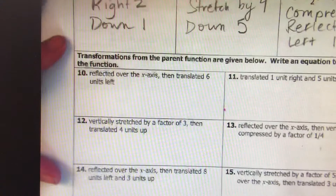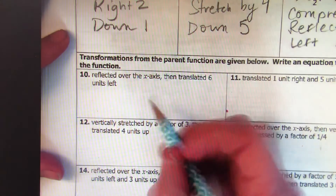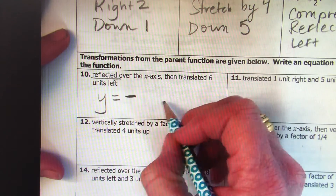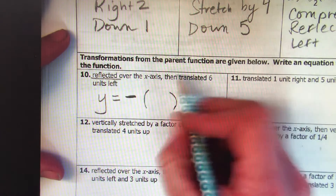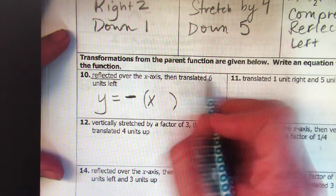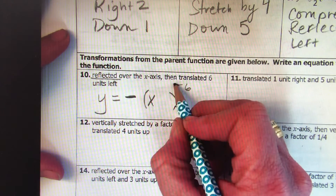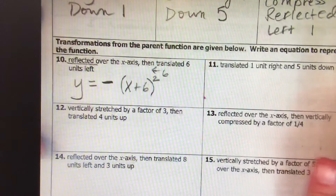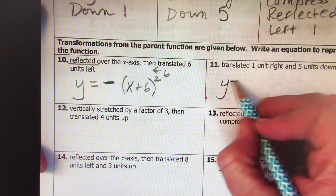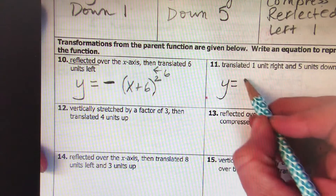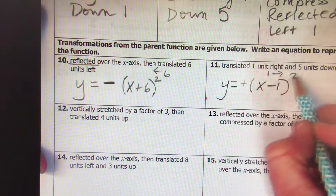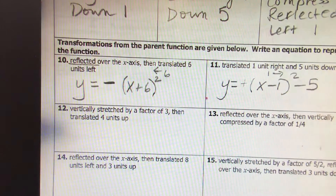For problem 10: reflect over the x-axis, then translate. If you see the word 'reflected,' that's a negative sign. With parentheses for translations: going 6 to the left means the opposite, so it's plus 6. That gives y = -(x + 6)². For problem 11: it's translated only — positive. One unit to the right means minus 1, and 5 down means minus 5: y = (x - 1)² - 5. Good luck — may the force be with you!